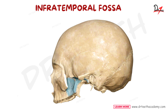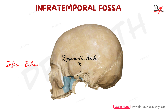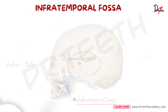What do we mean by infratemporal fossa? Infra means below, so obviously it is below the temporal fossa. It is an irregular space present below the zygomatic arch. Here we have the zygomatic arch and just below this arch we can see this irregular space — this is the infratemporal fossa. So above the zygomatic arch we have the temporal fossa, and below it we have the infratemporal fossa.